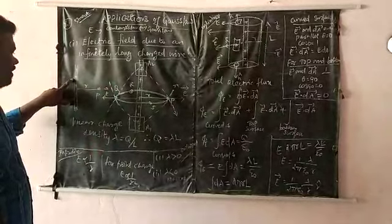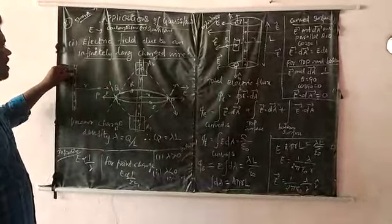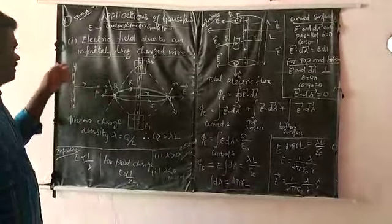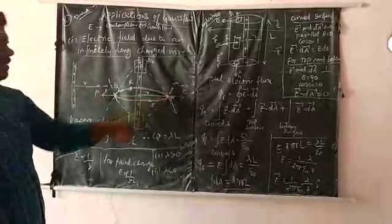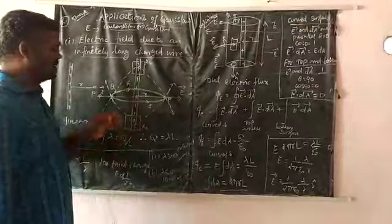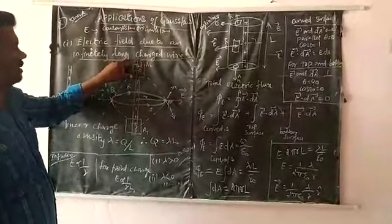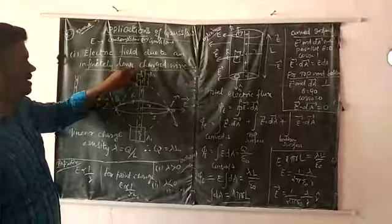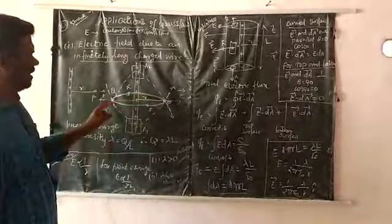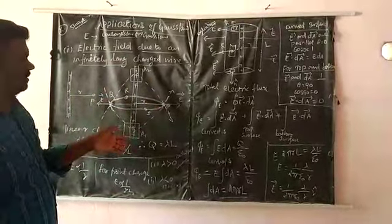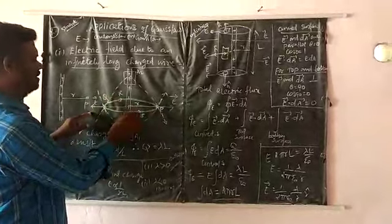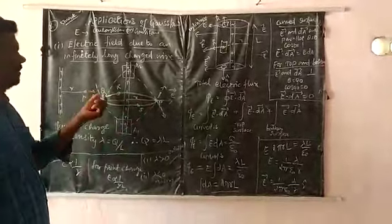First, let us consider an infinitely positively charged wire. Let us consider point P, which is perpendicular to the charged wire at a distance R. We consider small elemental areas A1 and A2 on the Gaussian surface. Let us consider a Gaussian surface around the charged wire. The electric field at points P, Q, R, S on the surface has the same magnitude.